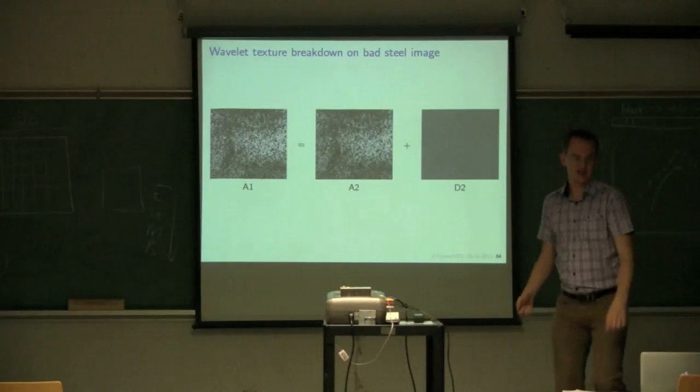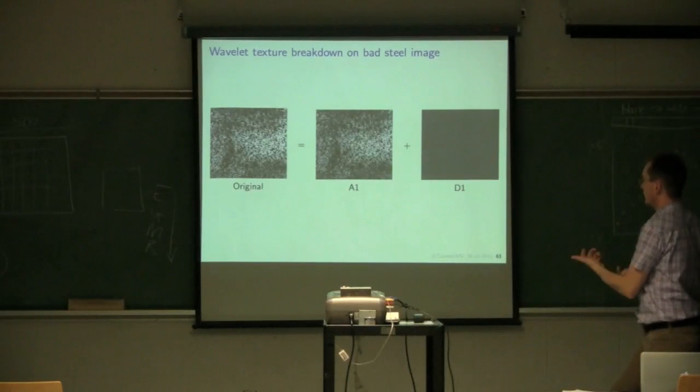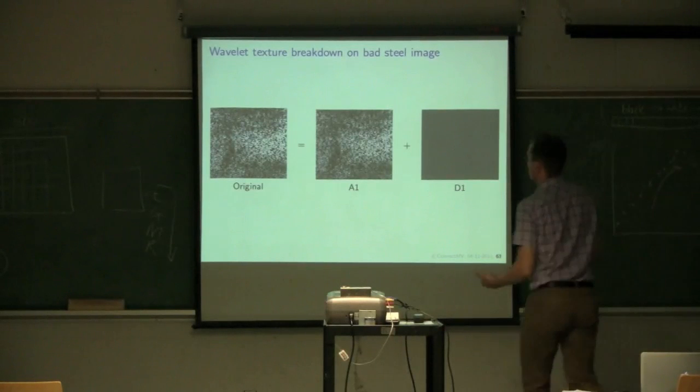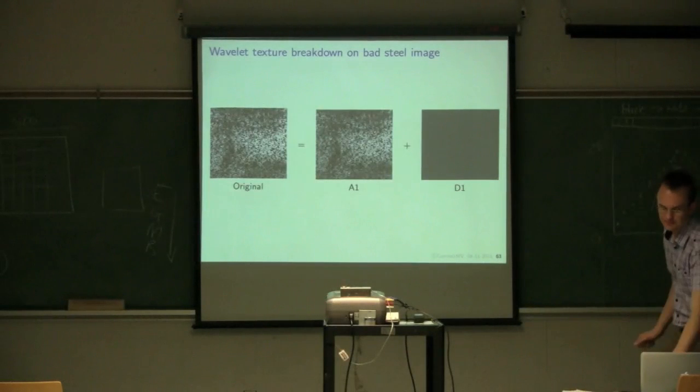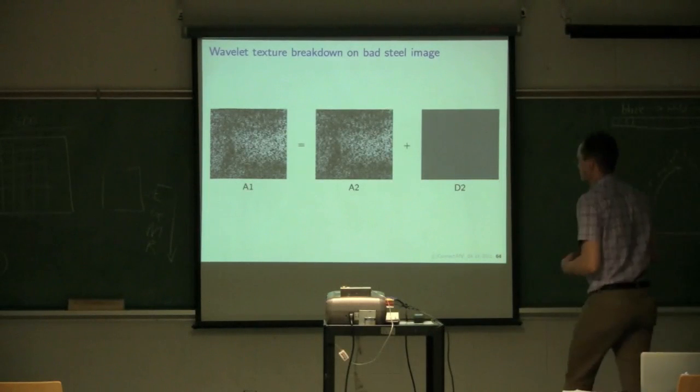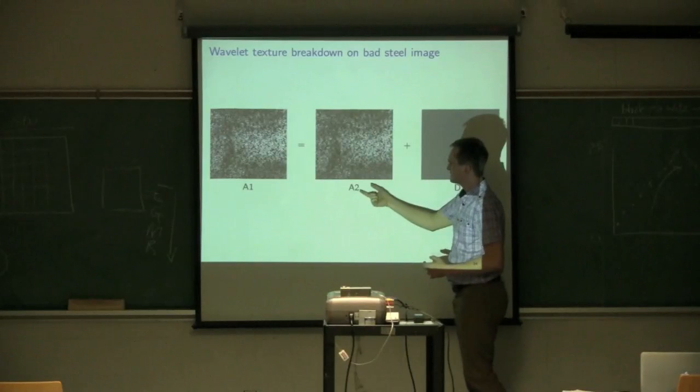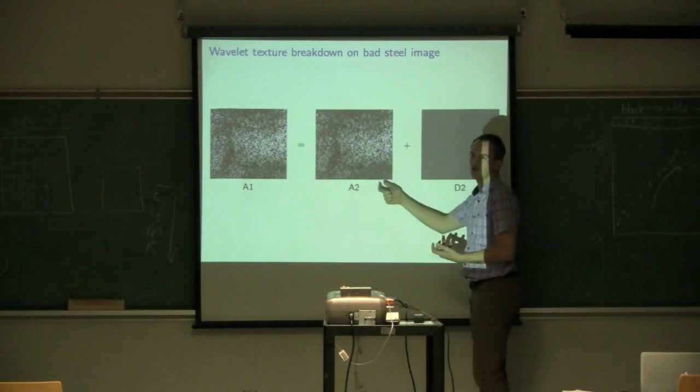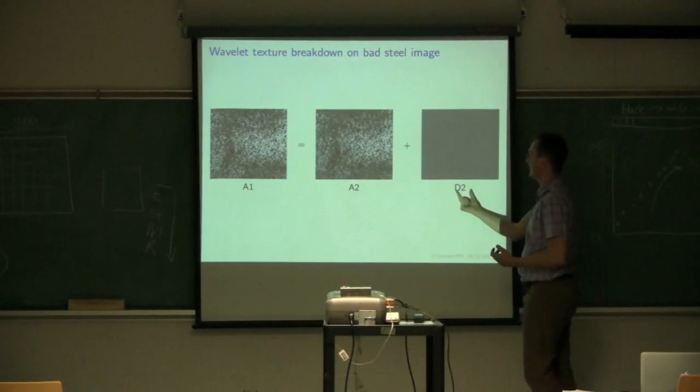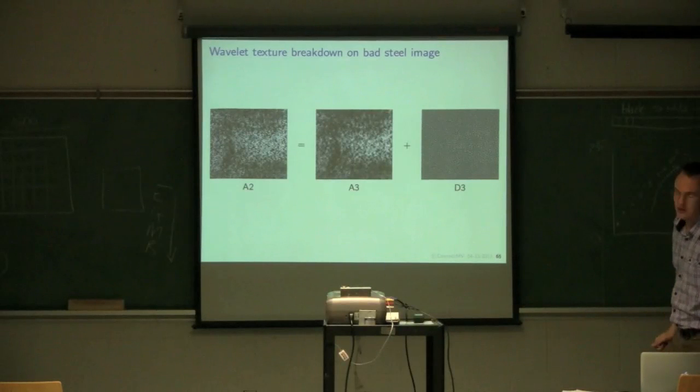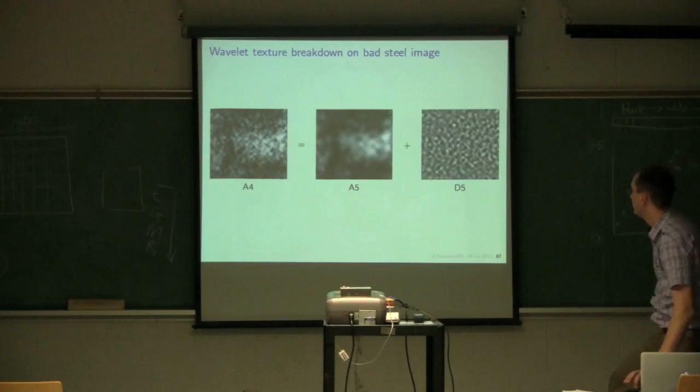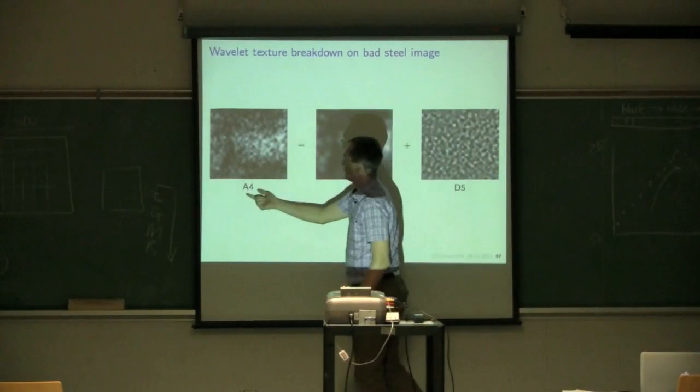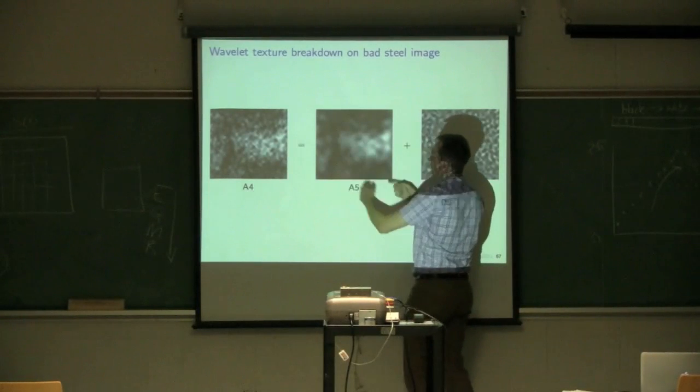Then you do another round with the wavelet decomposition, and this time you decompose A1. So, the first approximation is decomposed into a second approximation, and then its associated detailed image. So, the sum of A2 and D2 gets you back A1. Your original image can be reconstructed by combining your first approximation, the low frequency information, with the high frequency information. Put those two together and you'll get back your original image. Pixel for pixel summation.